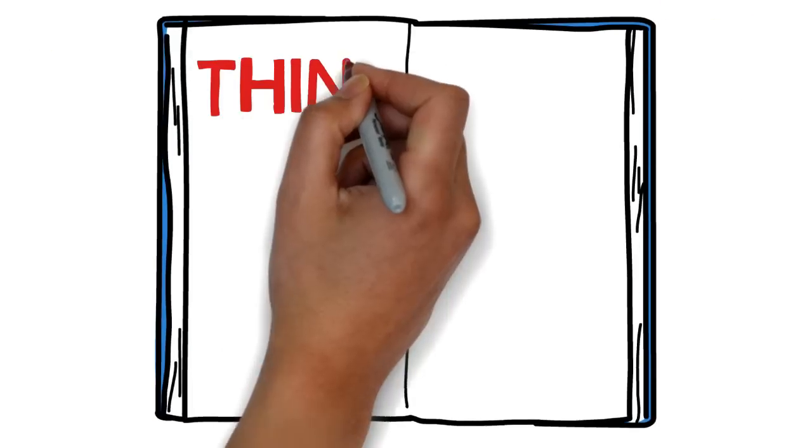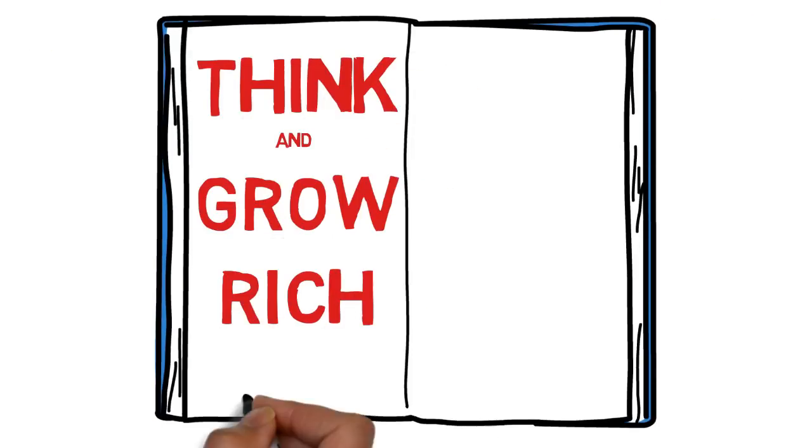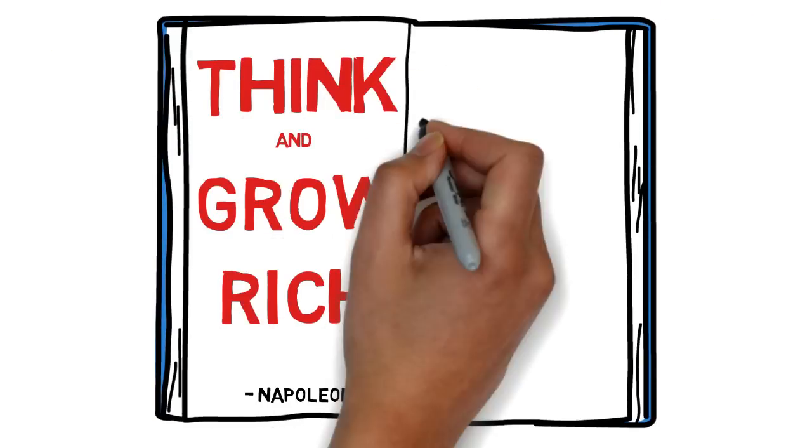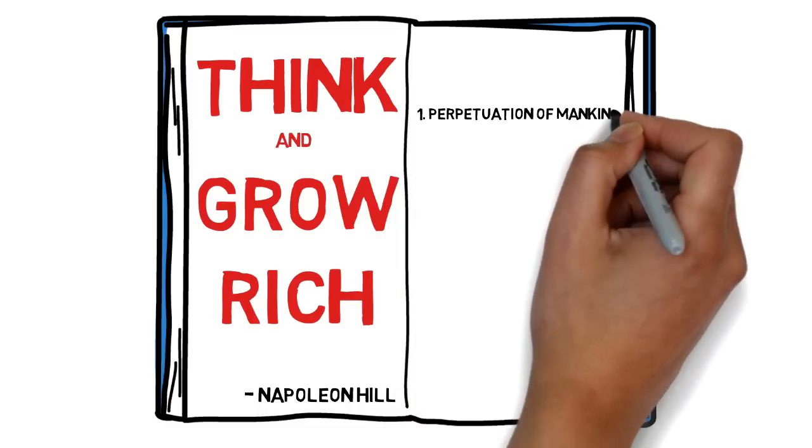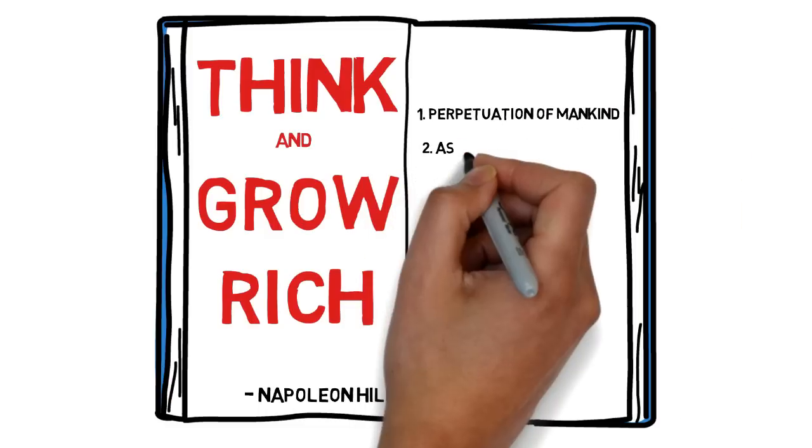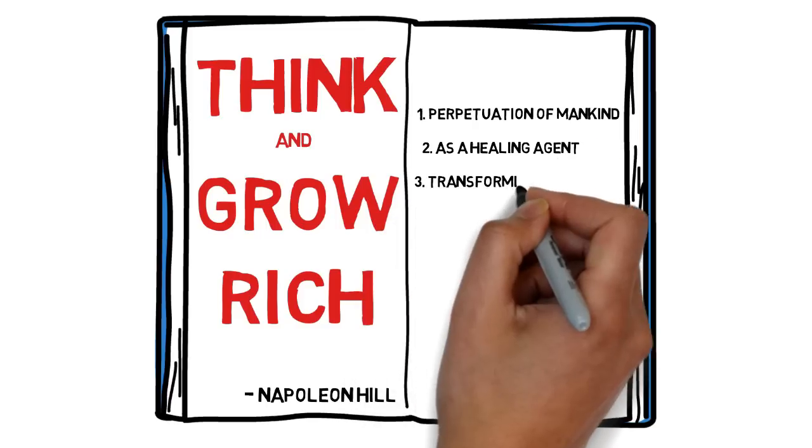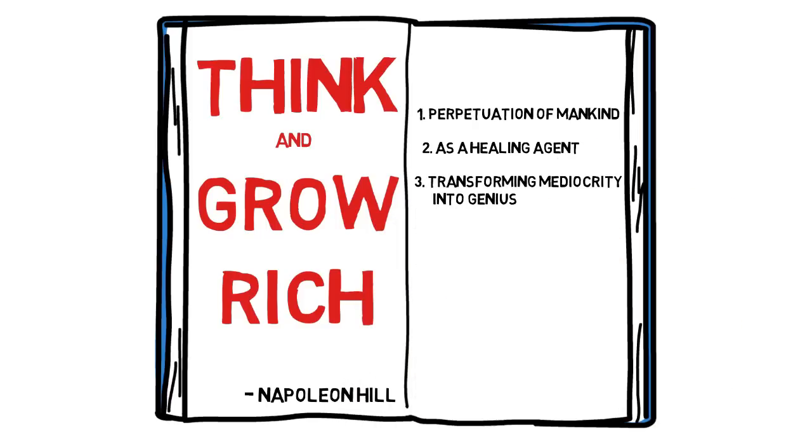From the book Think and Grow Rich by Napoleon Hill, the emotion of sex has three uses: the perpetuation of mankind, as a healing agent, and transforming mediocrity into genius by transmutation.